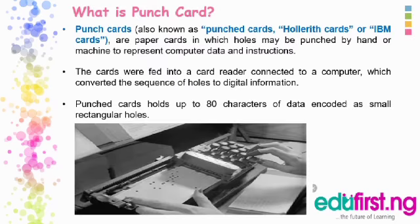What is a punch card? Punch cards, also known as punched cards, Hollerith cards or IBM cards, are paper cards in which holes may be punched by hand or machine to represent computer data and instructions. Before now, punch cards were a widely used means of inputting data into early computers. The cards were fed into a card reader connected to a computer, which converted the sequence of holes to digital information.